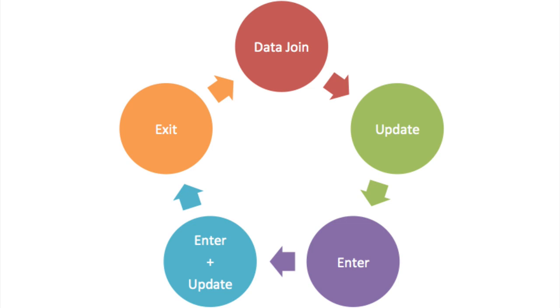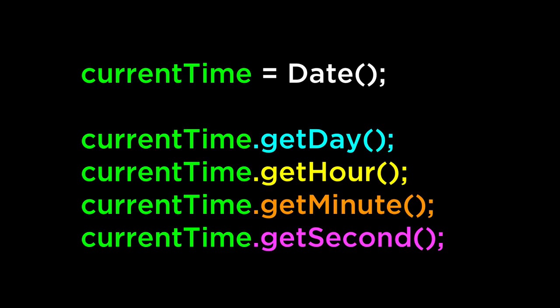Though there are myriad ways to get and send changing data from the server, we will start slowly. For now, we will focus on using JavaScript to generate changing data. We will use the JavaScript date object to generate data. This is pretty simple to use and you should be very familiar with how hours, minutes, seconds, and days work.